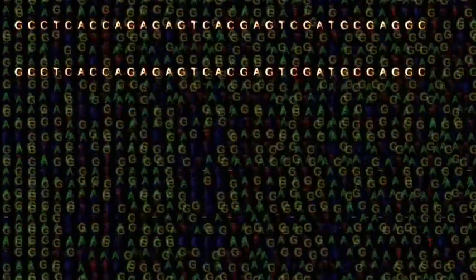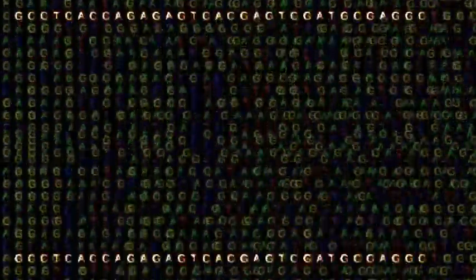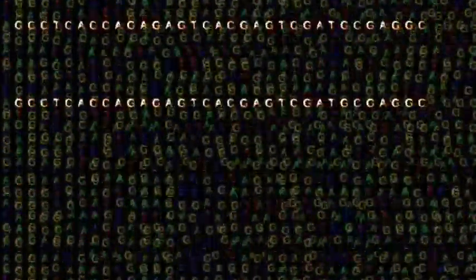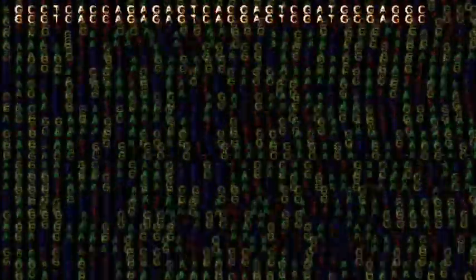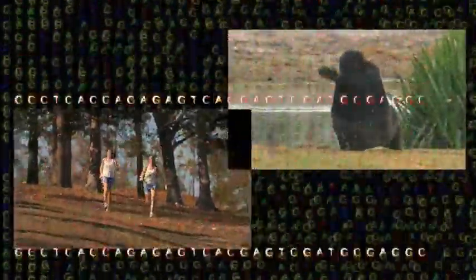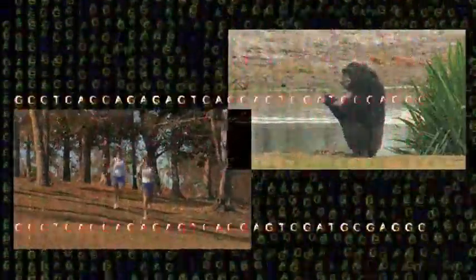In human DNA, there are about 30,000 endogenous retroviruses. There are at least seven distinct instances of identical retro-gene insertions shared between chimps and humans.